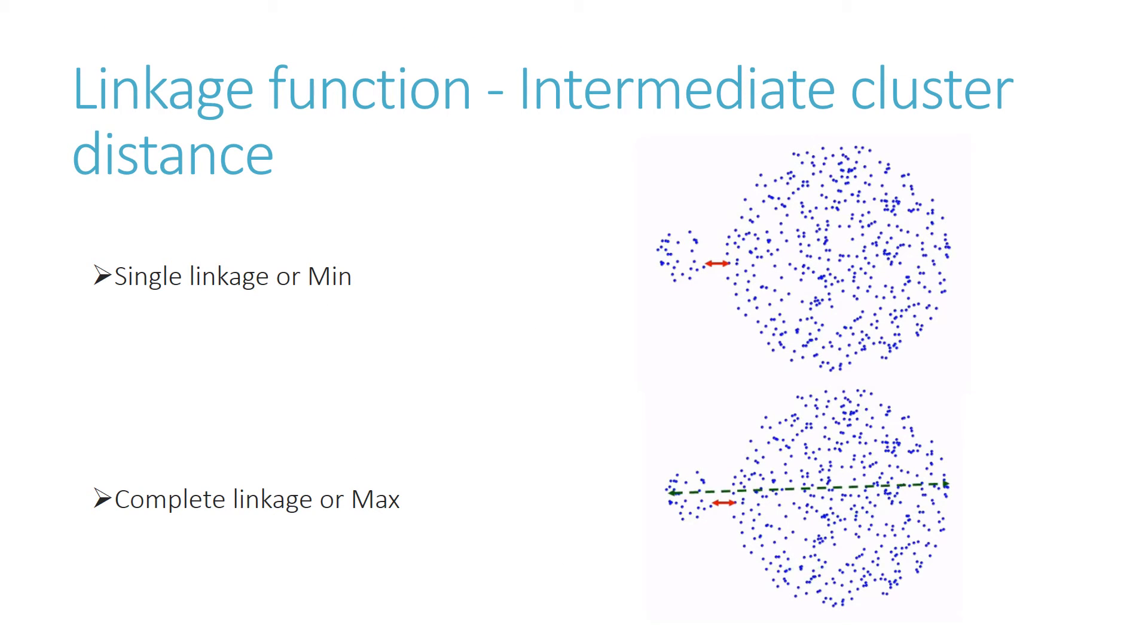Now, how distance is measured between two clusters. It's measured through linkage function. It's all about how you calculate distance between two clusters—that is, intermediate cluster distance. Single linkage is where distance between two closest objects from both the clusters is measured. It's also called min, as given in picture one. Complete linkage is where distance between two farthest points is measured, also called max, which is shown by the longer line. By using several methods, the intermediate distance can be measured.